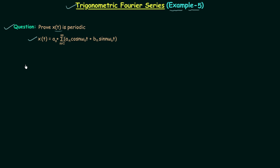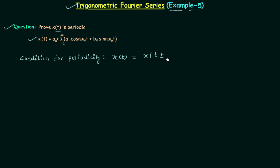We already know the condition for periodicity. Signal Xt is said to be a periodic signal if and only if, after performing the time shifting — either left shifting or right shifting by the time period — we get the same signal. This is the condition for periodicity where T is the time period, and it can be the fundamental period or any other period.